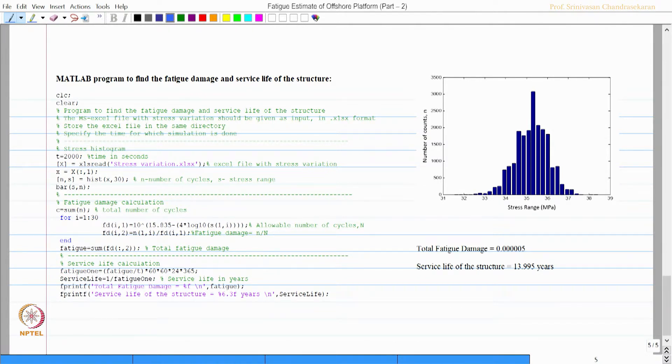The MATLAB coding for estimating fatigue damage and service life is now available on the screen. This program actually estimates the fatigue damage and service life of the structure. MS Excel file with stress variation is the input required for this program in Excel S format which reads the file directly.